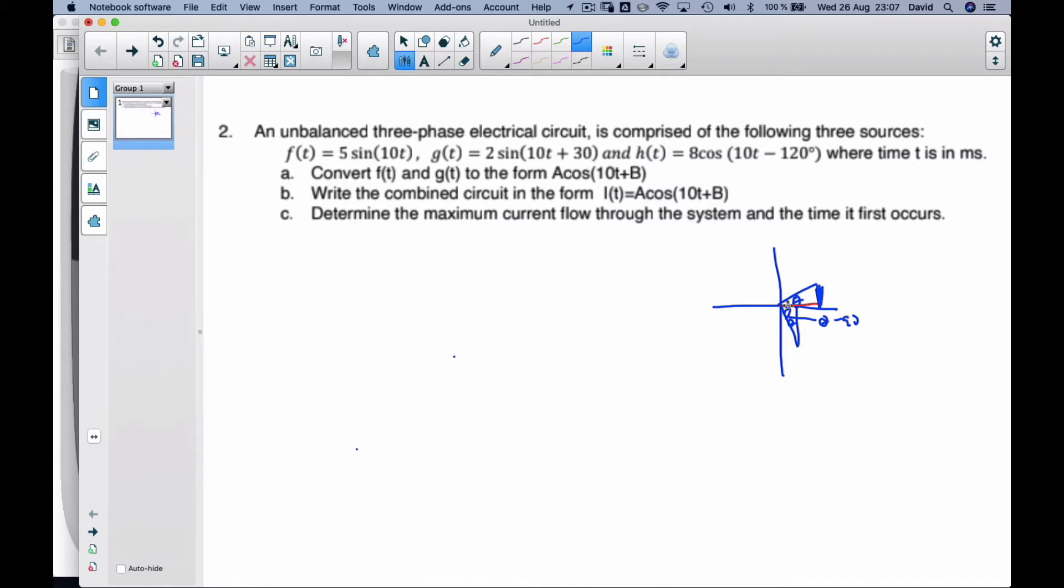this distance here is the same as this distance here, cosine. So I know that sine theta equals cosine theta minus 90 degrees.